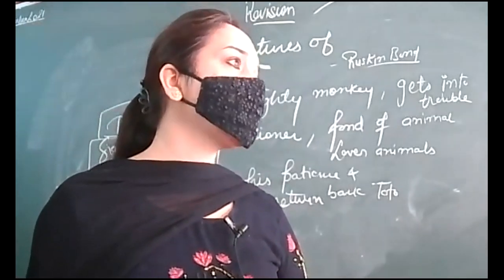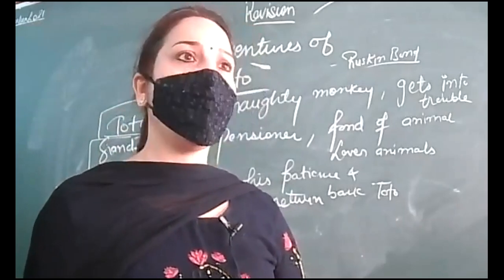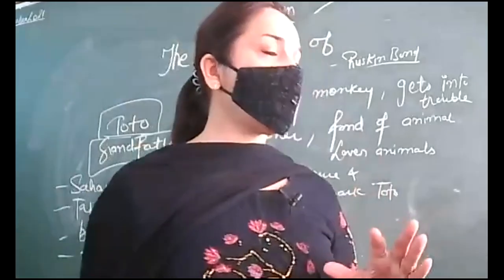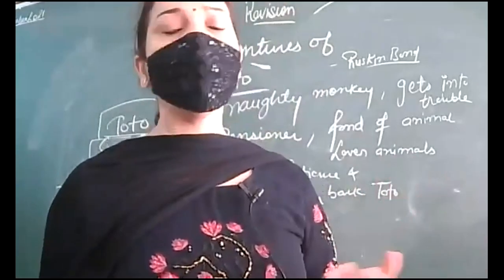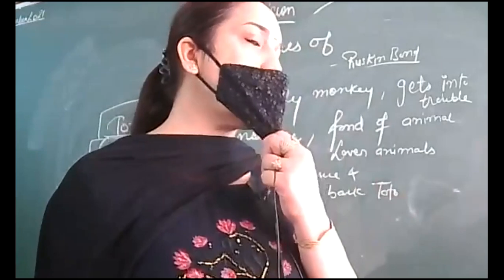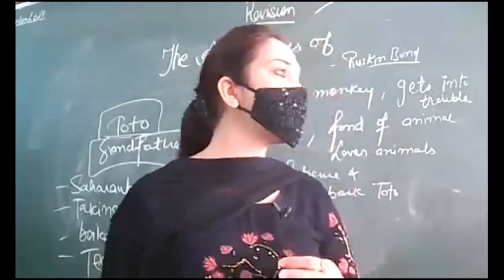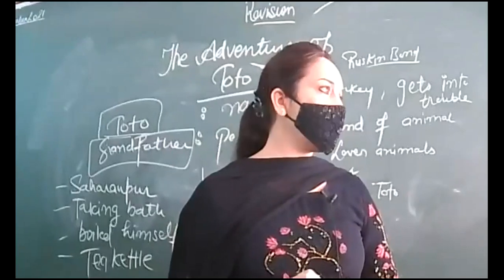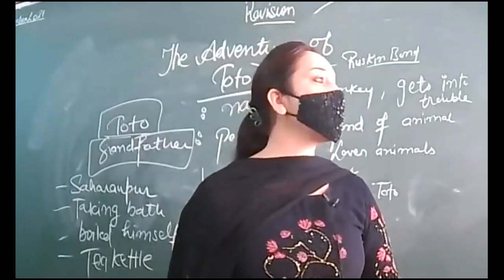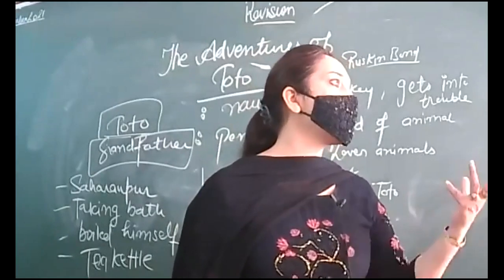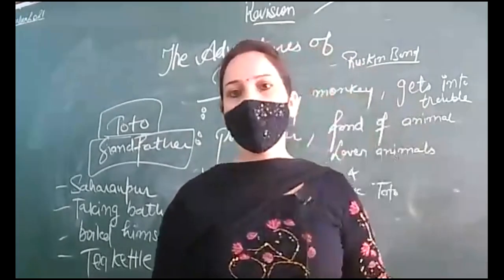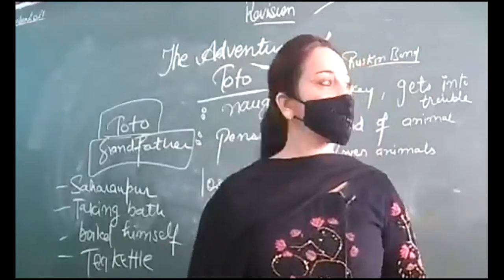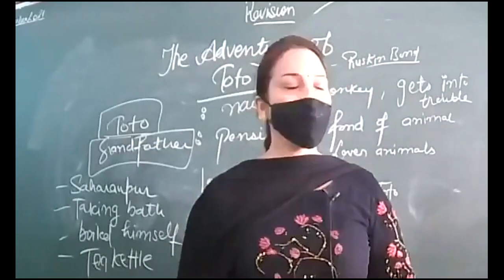When grandfather was moving to Saharanpur, he hid Toto inside a bag. On the way he was caught — Toto was creating so much nuisance. Grandfather was caught at the railway station and had to pay Toto's fare — his ticket charges — as well.